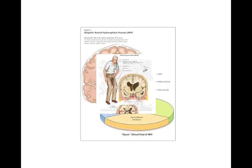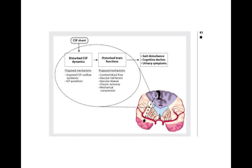Looking at this picture, the individual stands unstable, walking with short steps and stooping forward — this is a patient with normal pressure hydrocephalus. This picture shows the mechanism involved in the development of NPH: initially there is disturbance in the CSF dynamics, which leads to disturbed brain function manifesting as gait disturbance, cognitive deficiency, and urinary symptoms.